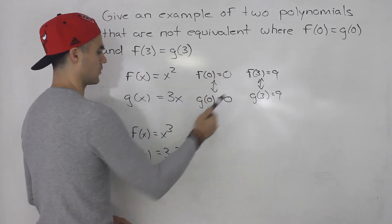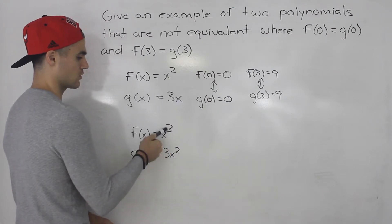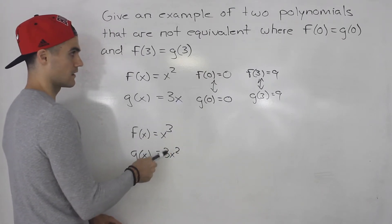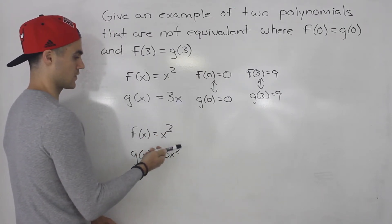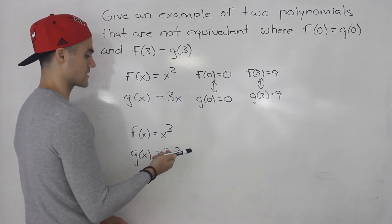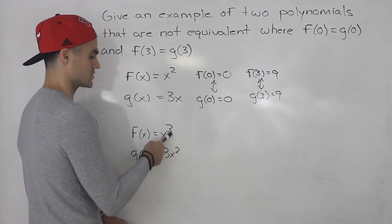Notice that both of these will hold. f of 0 g of 0 they would both be 0. And then f of 3 and g of 3 would both be 27, right? 3 to the power of 3 is 27.